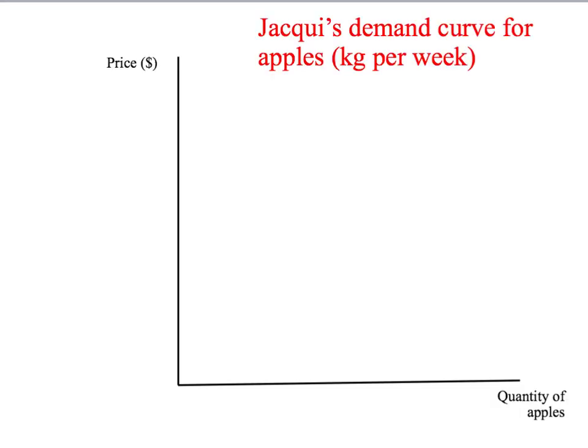To draw our demand curve, we need some axes. I'm going to draw a standard set of axes. On the vertical axis, we're going to have price — price is going to be our variable on the y-axis. On our horizontal axis, we're going to have the quantity of apples that Jackie would like to buy. We're going to ask the same question over and over again to draw her demand curve: given the price, how many apples would Jackie like to buy?